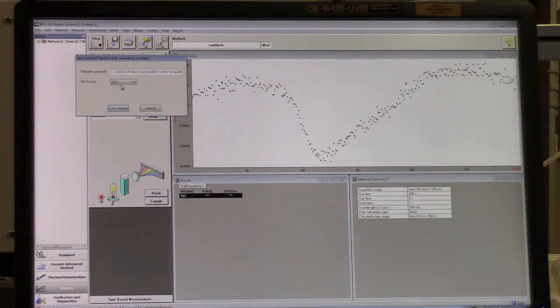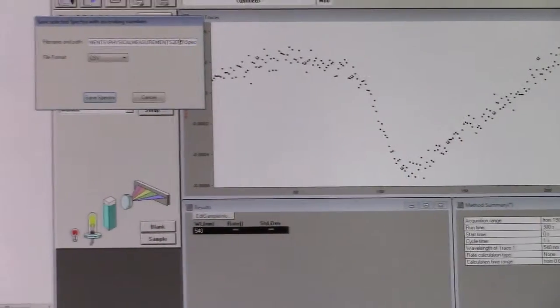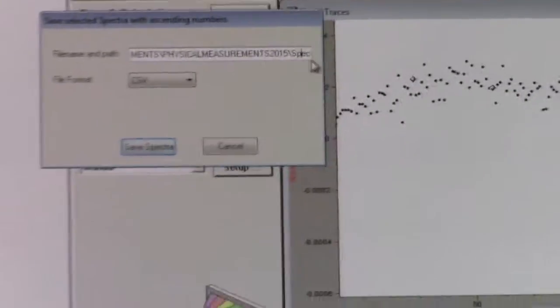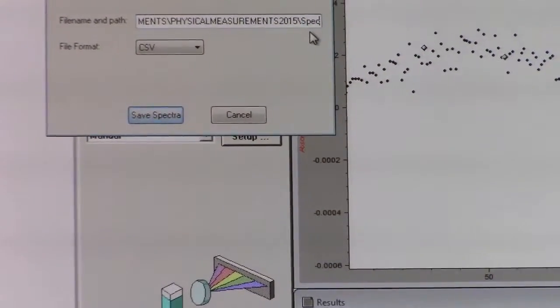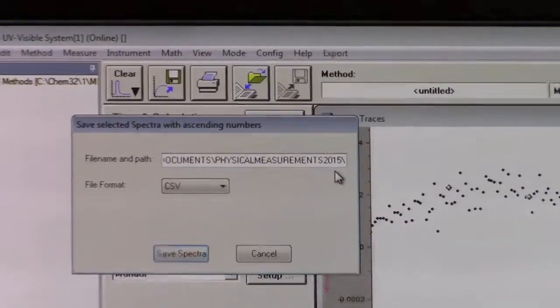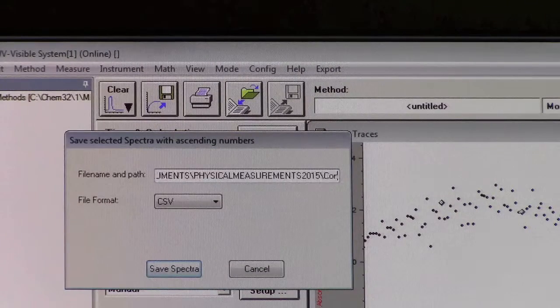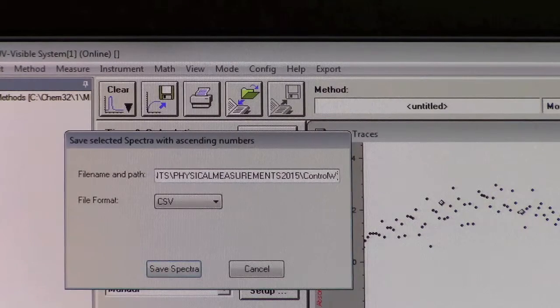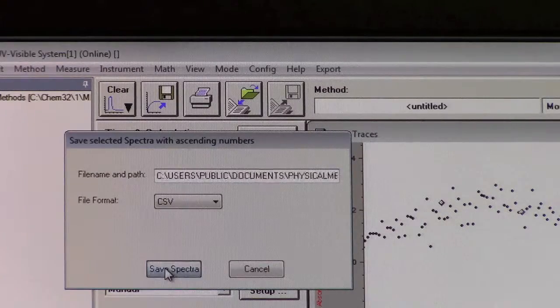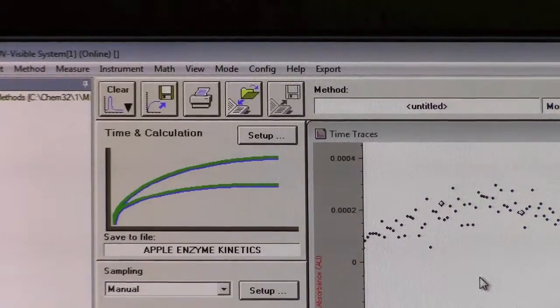Choose the file format as CSV and check the path. The path should already be set to the appropriate location. At the very end, you can name the particular trial. In this case, let's say it's a control without enzyme. Click Save Spectra, and it is now exported as a CSV.